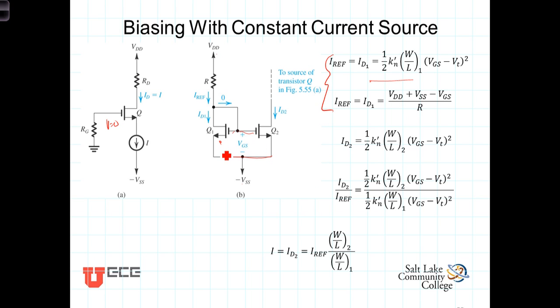So the current I_D2 is equal to, then, one-half K sub N prime W over L. This is the aspect ratio of the second transistor, so they won't necessarily have the same aspect ratios, or at least they don't have to, but V_GS is the same for both transistors.